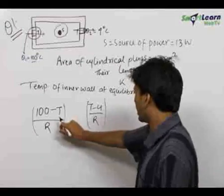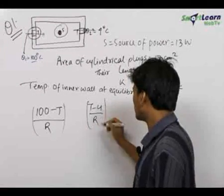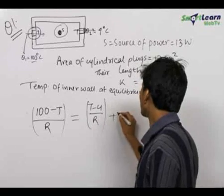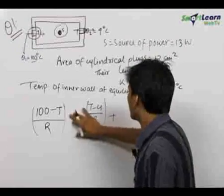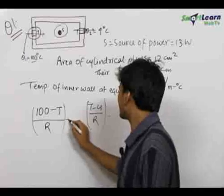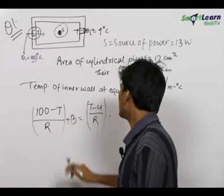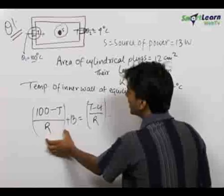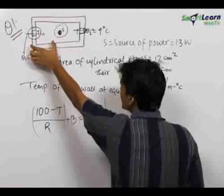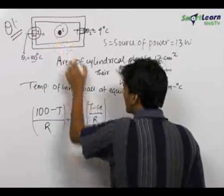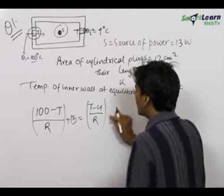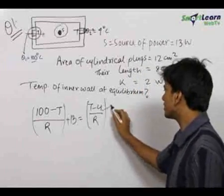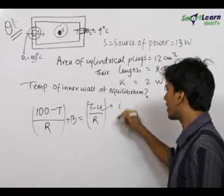So we can write: (100 − T) / R + 13 = (T − 4) / R. That is, the net rate at which heat is being generated or coming into the system should equal the net rate at which heat is leaving the system. This is the formula for heat current: (T₁ − T₂) / R.